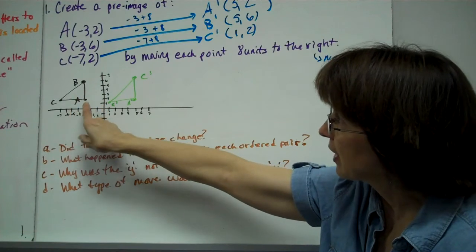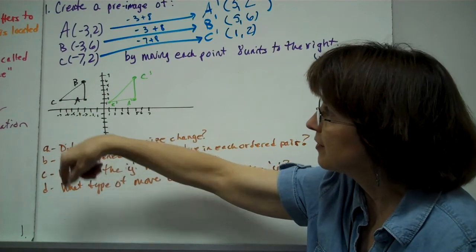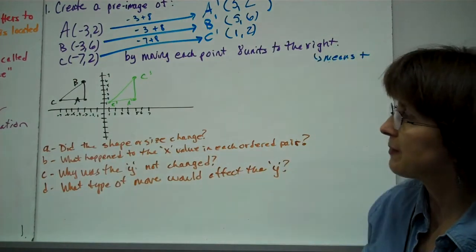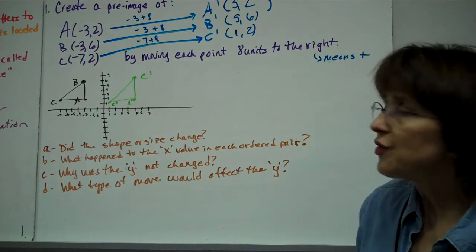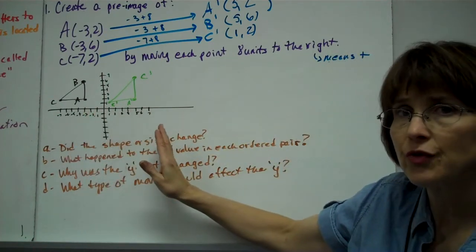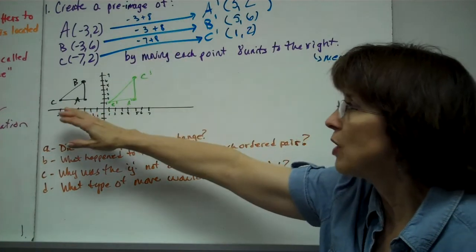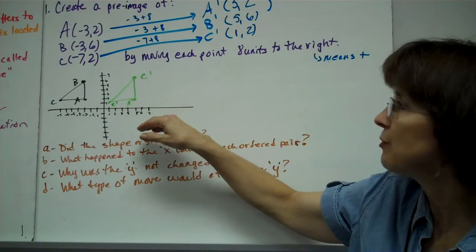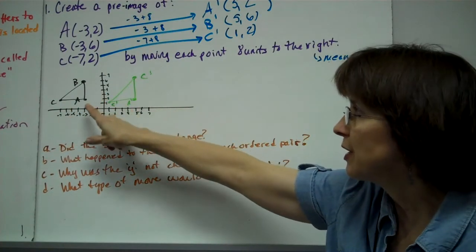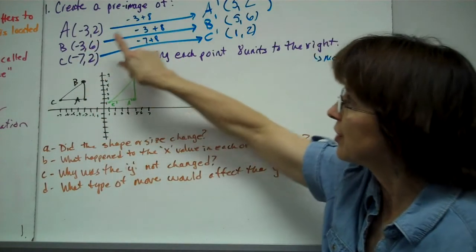Here's my pre-image right here: A(-3,2), B(-3,6), and C(-7,2). Go ahead and graph those. Then we're going to move each point eight units to the right. If I move them to the right, it's further over on the positive, so you're going to add eight to the one that moves across. The number that moves across is your x value, because remember, your y is up or down.